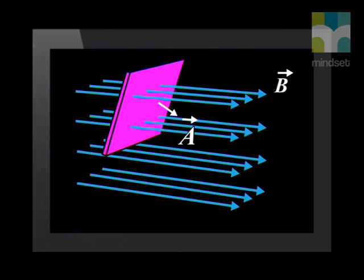If there is an angle between the magnetic field B and the normal to the area A, then we calculate the component of the magnetic field perpendicular to the area.